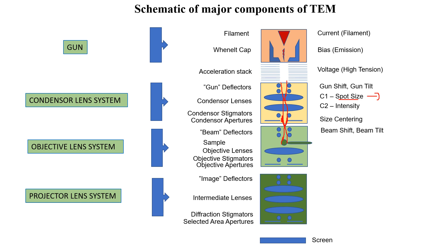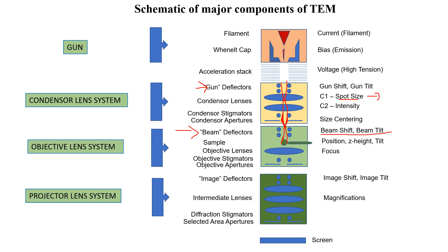In the objective lens system, beam deflectors provide beam shift and beam tilt after the spot size and intensity are set by C1 and C2. The gun deflector in the condenser lens system makes a more preliminary determination of how the beam looks. The Z height or tilt can also be adjusted here. The objective lens current is used for focus, and then image deflectors make image shift or image tilt.